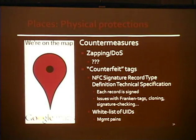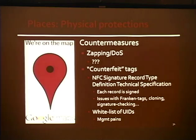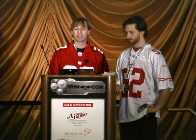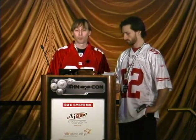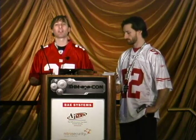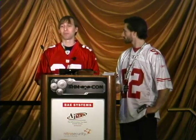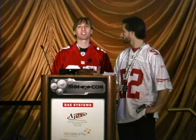Countermeasures for physical destruction, zapping, and DoS attacks are a really hard problem to deal with — we'd be curious to hear good suggestions. For counterfeit tags — putting your own tag on top — there are specifications that could help. There's an NFC Signature Record Type Definition from the NFC Forum, so you could sign each of your NDEF records. There are interesting attacks with 'Franken-tags' about which data is signed and how it's checked. You also have to roll your own PKI for validating those signatures, so it's a bit of a pain and we haven't seen anybody actually implement it. Another suggestion is using UIDs as a whitelist — only respond to tags with a serial number you trust — but that gets painful in managing those tags.